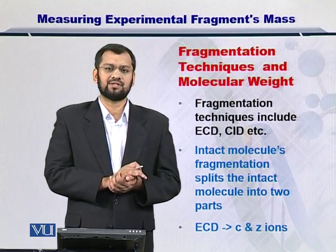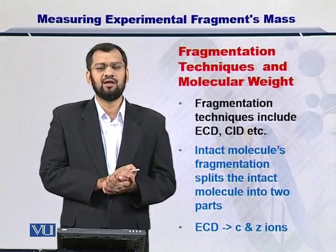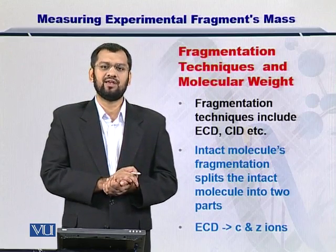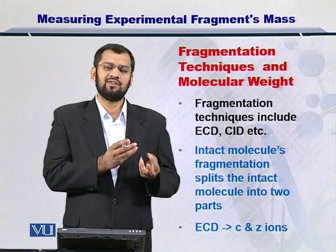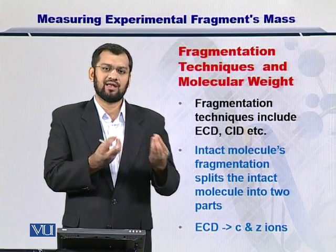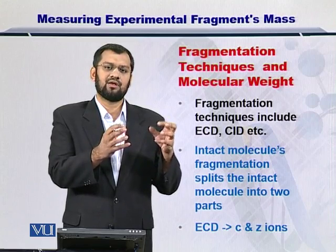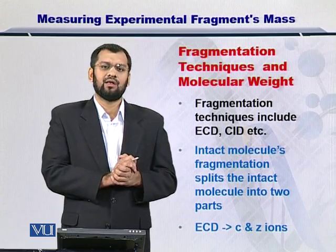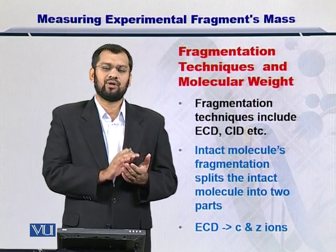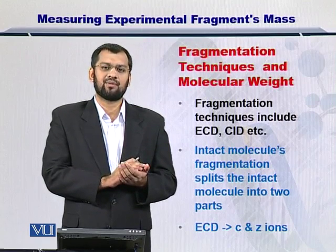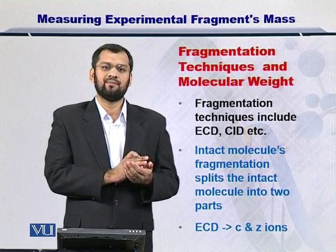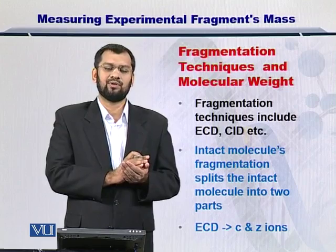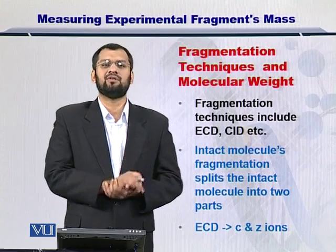After the fragmentation, for instance, CID will report B and Y ions, ECD will give you C and Z ions. So these C and Z, B and Y, A and X are actually two fragments reporting from the same protein. The only reason why we give different names to these fragments is because of the location at which the backbone has been fragmented to produce these ions.